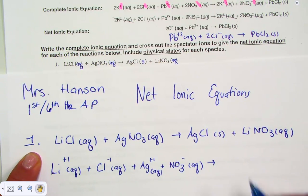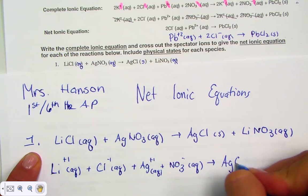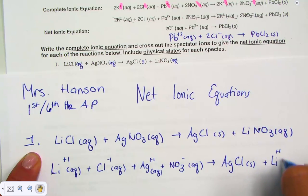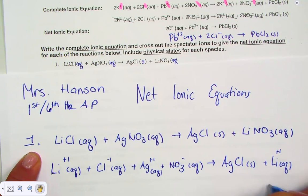Forms? Leave together the solid, AgCl silver chloride. Dissociate the strong electrolyte. We get an aqueous ion of lithium and the aqueous ion of nitrate.